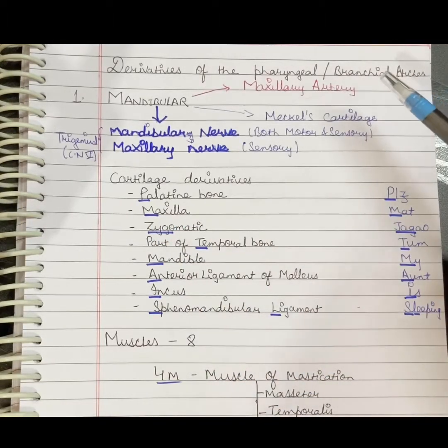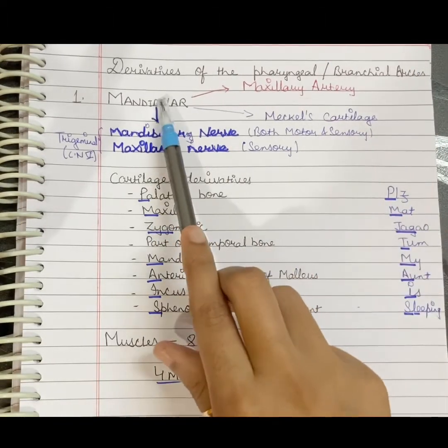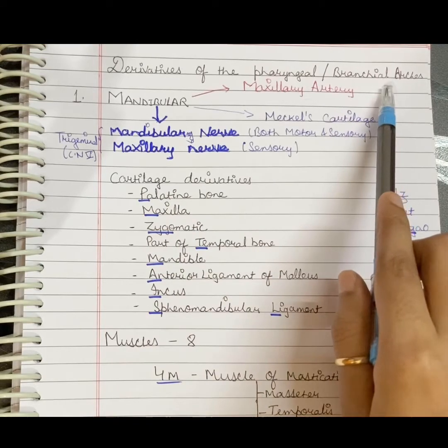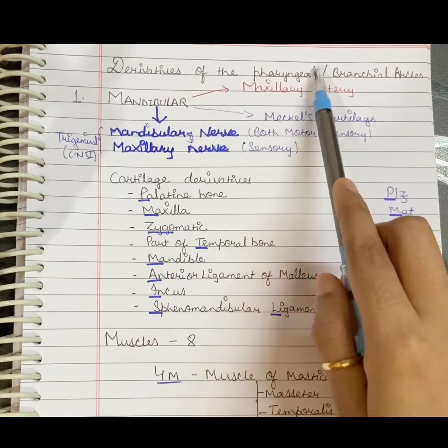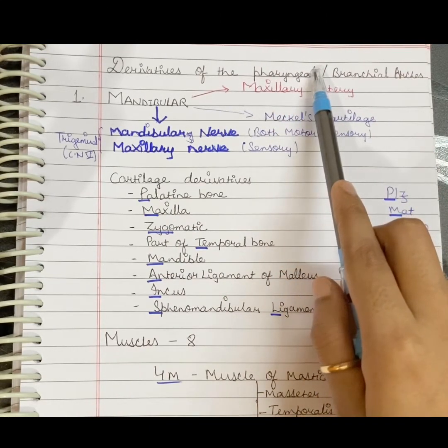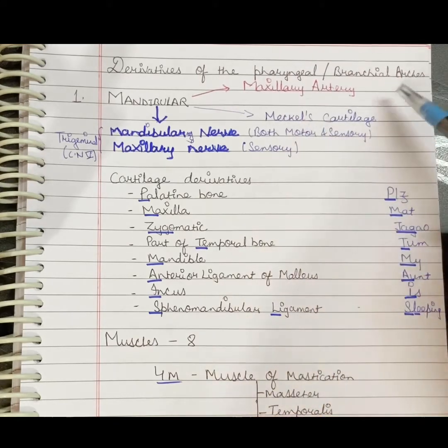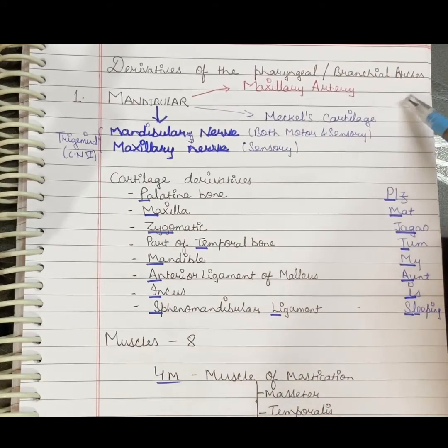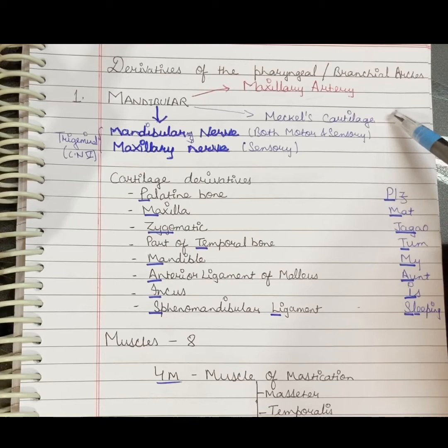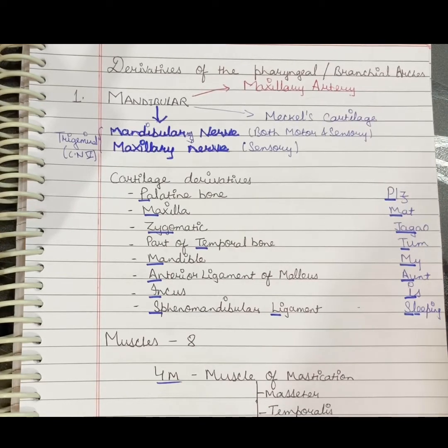Hello everyone, today I am going to tell you about the derivatives of pharyngeal arches. Pharyngeal arches are formed in the initial stage of embryonic development. There are six pharyngeal arches, out of which the fifth disappears soon after formation.